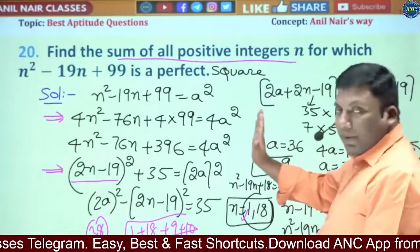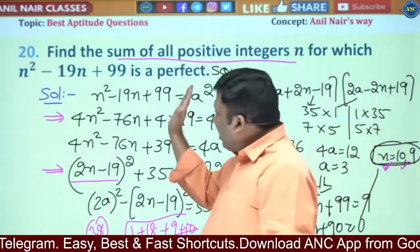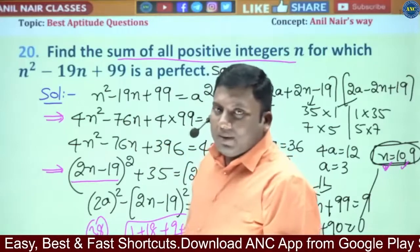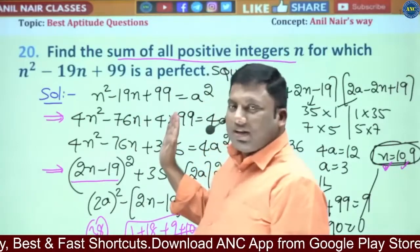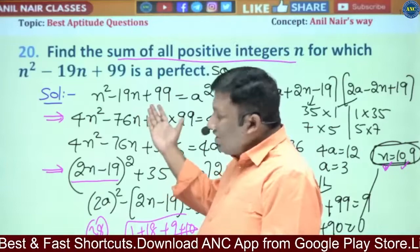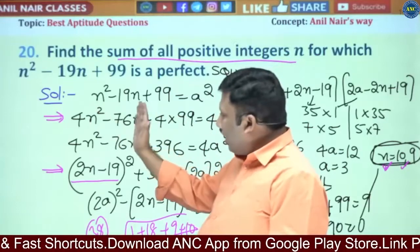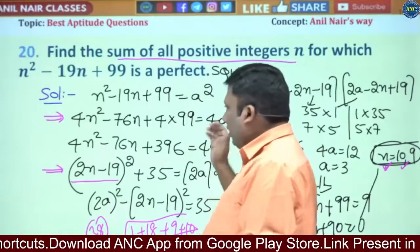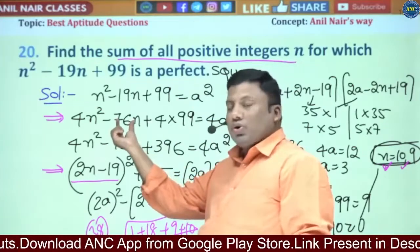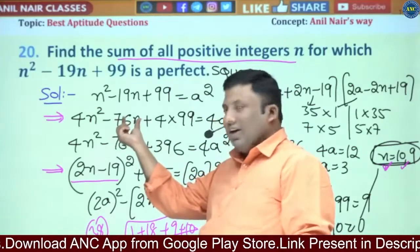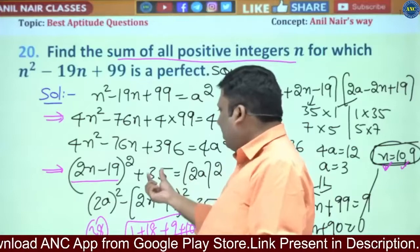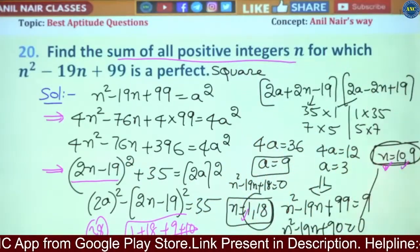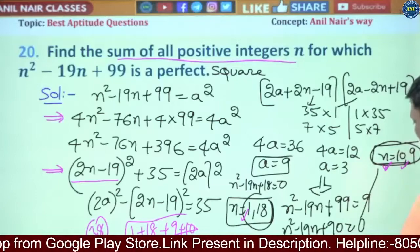Consider N squared. Multiplying by 4, the idea is: I looked at the question and there are 3 terms. What is the square of a number that will have 3 terms? Consider A plus or minus B whole squared: A squared minus 2AB plus B squared. So equivalent to 4A squared, it is 2 into 2N. The remaining is 19. 19 squared is 361 plus 35. So the values are 1, 18, 10, and 9.